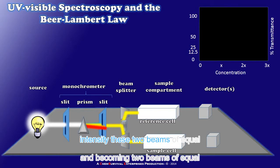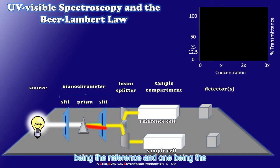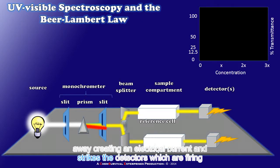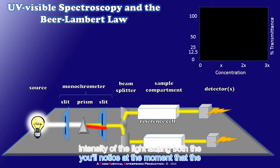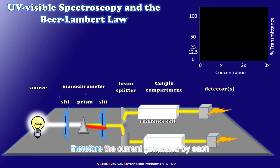These two beams of equal intensity will traverse a cell, a different one for each of course, one being the reference and one being the sample cell. As the beam exits these cells it strikes the detectors which are firing away creating an electrical current. And you'll notice at the moment that the intensity of the light exiting both the reference and sample cells is identical therefore the current generated by each detector is identical.